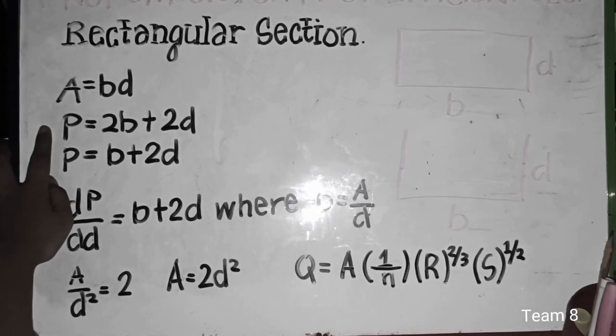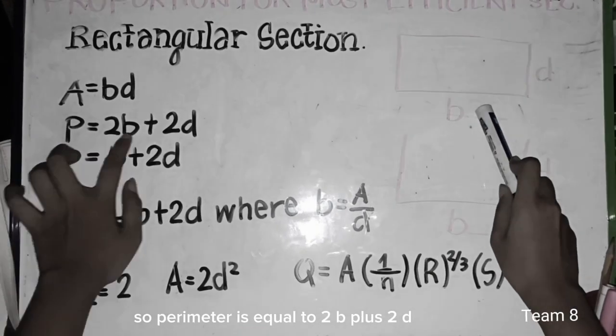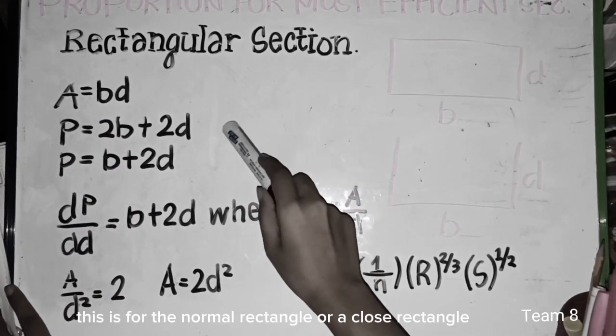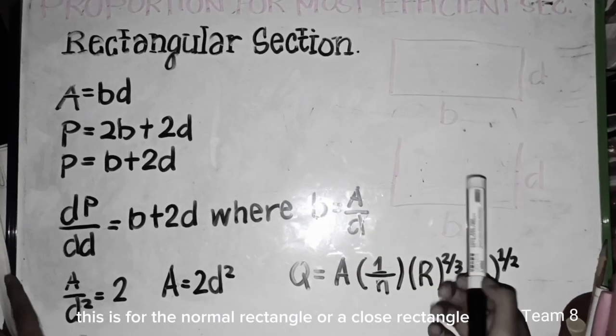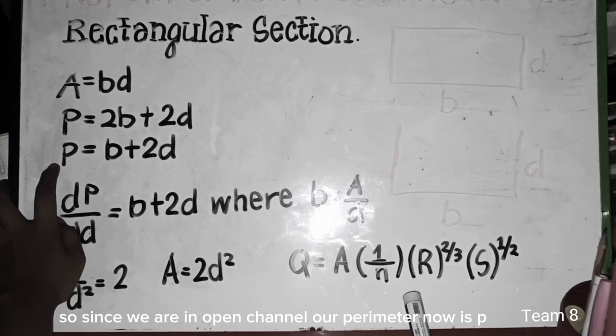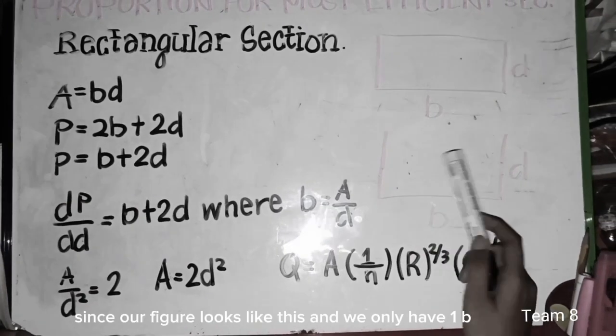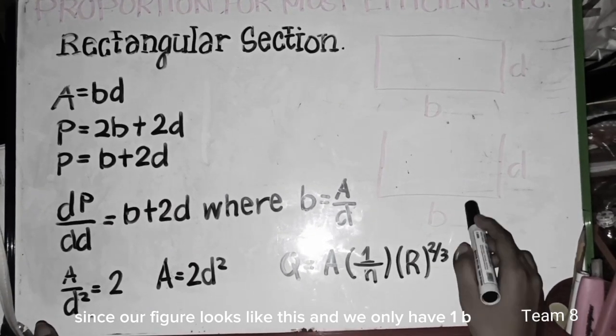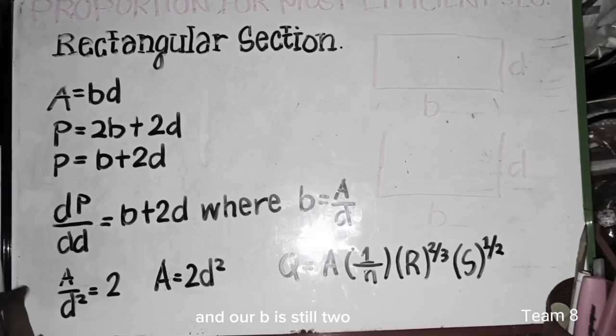Now, we also have our perimeter here, which is equal to 2B plus 2D. This is for the normal closed rectangle. So since we are in an open channel, our perimeter now is P equals to B plus 2D. Since our figure looks like this, we only have one B and our D is still 2.